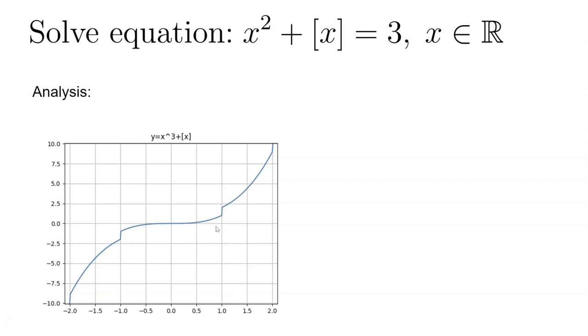So any x equals to an integer, it jumps plus one or minus one like this. But in general, it is monotonically increasing and it is one-to-one mapped to y. So anytime you have a y value, you get an x value. So it's one-to-one mapped.